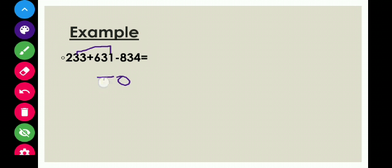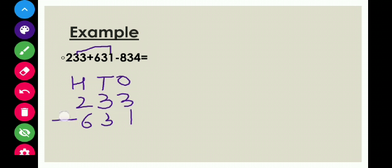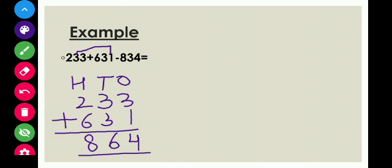Again, these are three-digit numbers. So we will write ones, tens, and hundreds. Put the numbers under the proper place values — 233 and 631 — and put a sign of plus. Now start adding with the ones column. Three plus one is equals to four. Three plus three is equals to six. Two plus six is equals to eight. So children, the sum of the first two numbers is eight hundred and sixty-four.